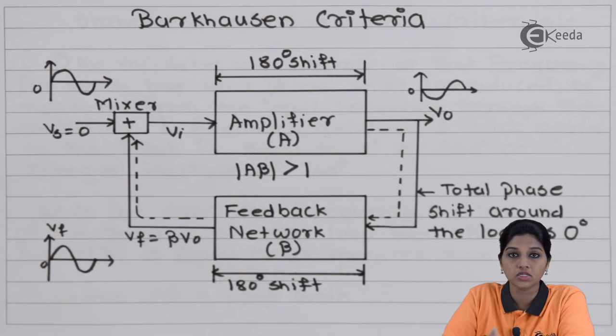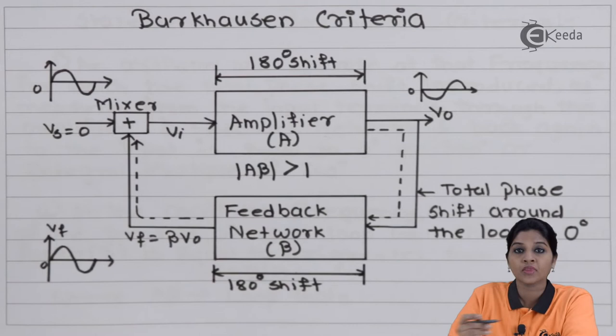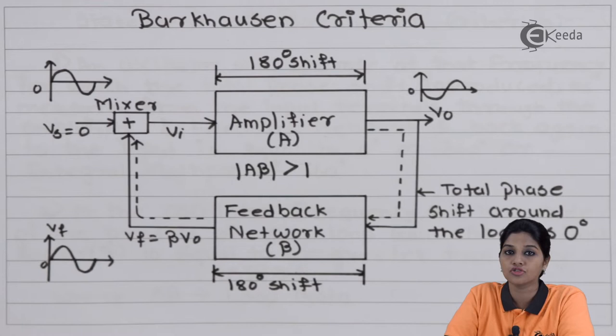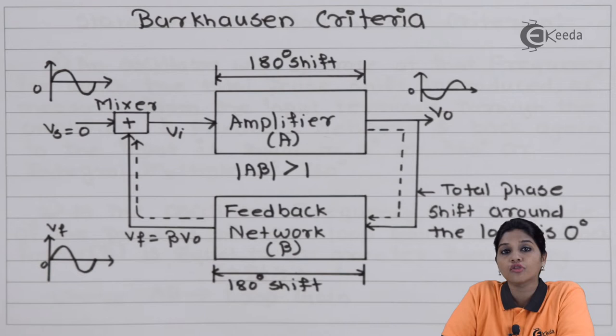If the amplifier introduces a phase shift of 180 degrees, then in order to have a total phase shift of 360 degrees or 0 degrees — that means in order to have positive feedback — the phase shift network or feedback network is required to provide an additional phase shift of 180 degrees.